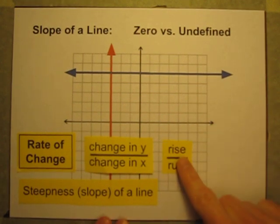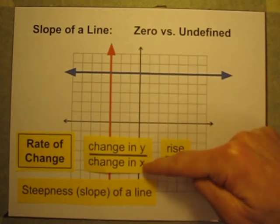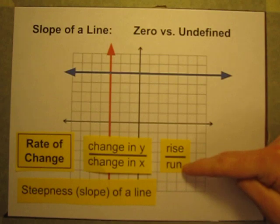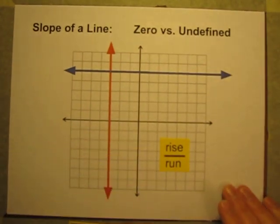The change in the y-values is your rise, and the change in your x-values is your run. So we're doing change in y divided by change in x, or rise divided by run. So let's calculate the rise divided by run of each of these lines.